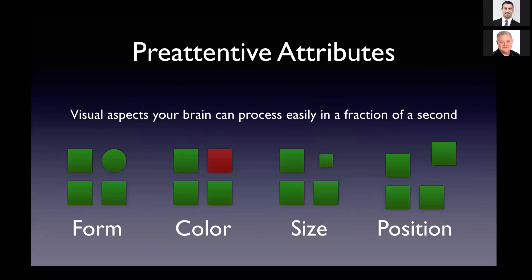When we design data visualizations, we really want to tap into what are called pre-attentive attributes. Pre-attentive attributes are visual aspects that you as an individual can process in a fraction of a second, because that part of your brain is the first thing that sees that information and doesn't need to pass it up to higher brain functions to understand — like reading does. So if we change the form or shape of something, the color of something, its size or position on the page or screen, your eye sees that immediately. That's part of your pattern recognition ability, and we want to take advantage of that when we do data visualization designs.